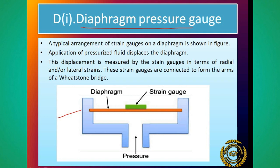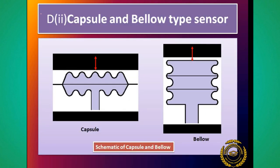These strain gauges are connected to form the arms of a Wheatstone bridge. Strain gauges use करते हैं ताकि Wheatstone bridge का arm बना सके, और उससे जितना voltage निकलेगा उससे हम pressure को measure कर सकते हैं।